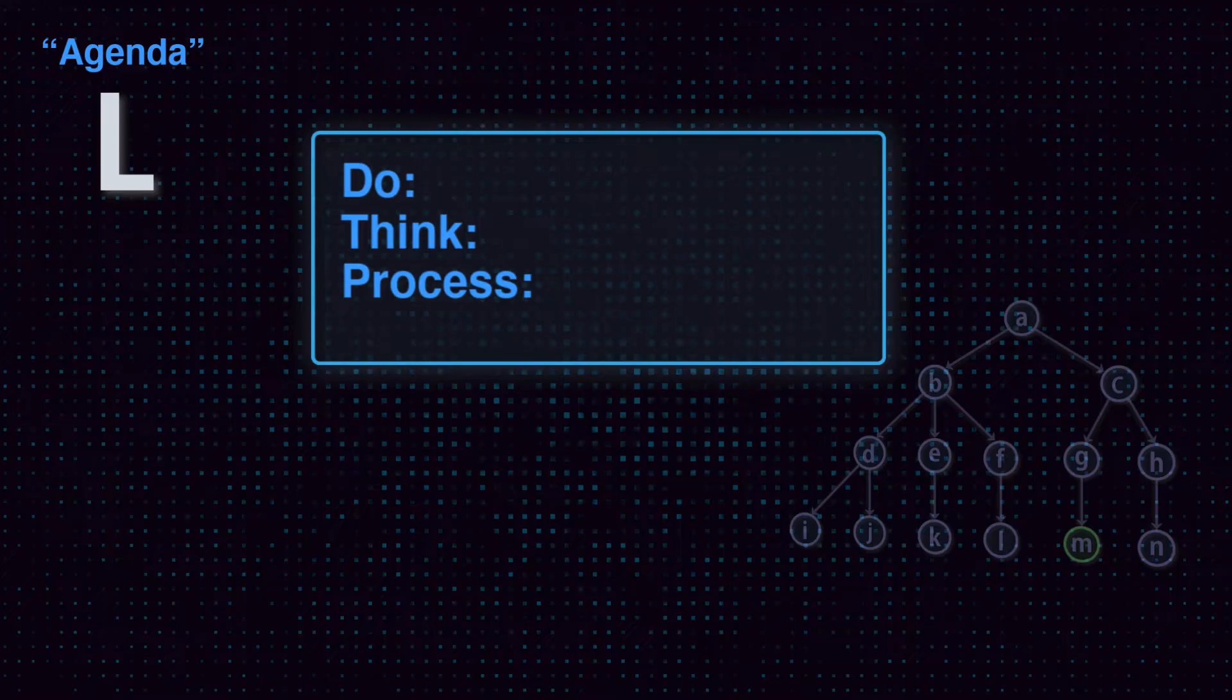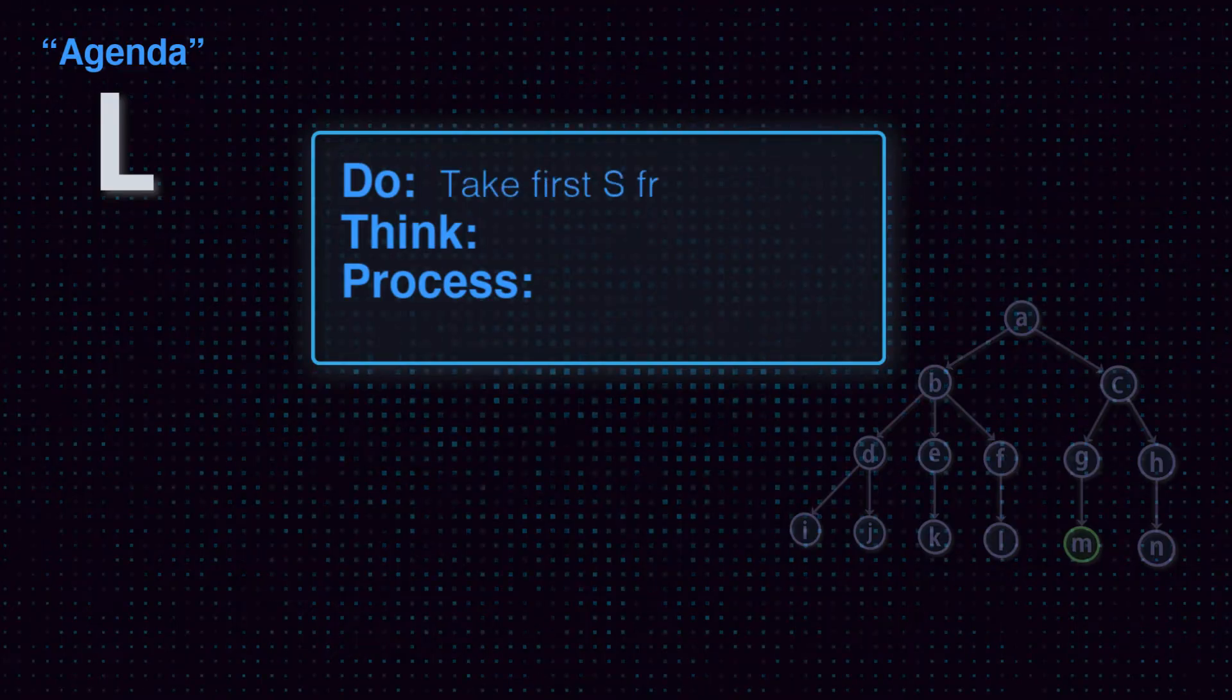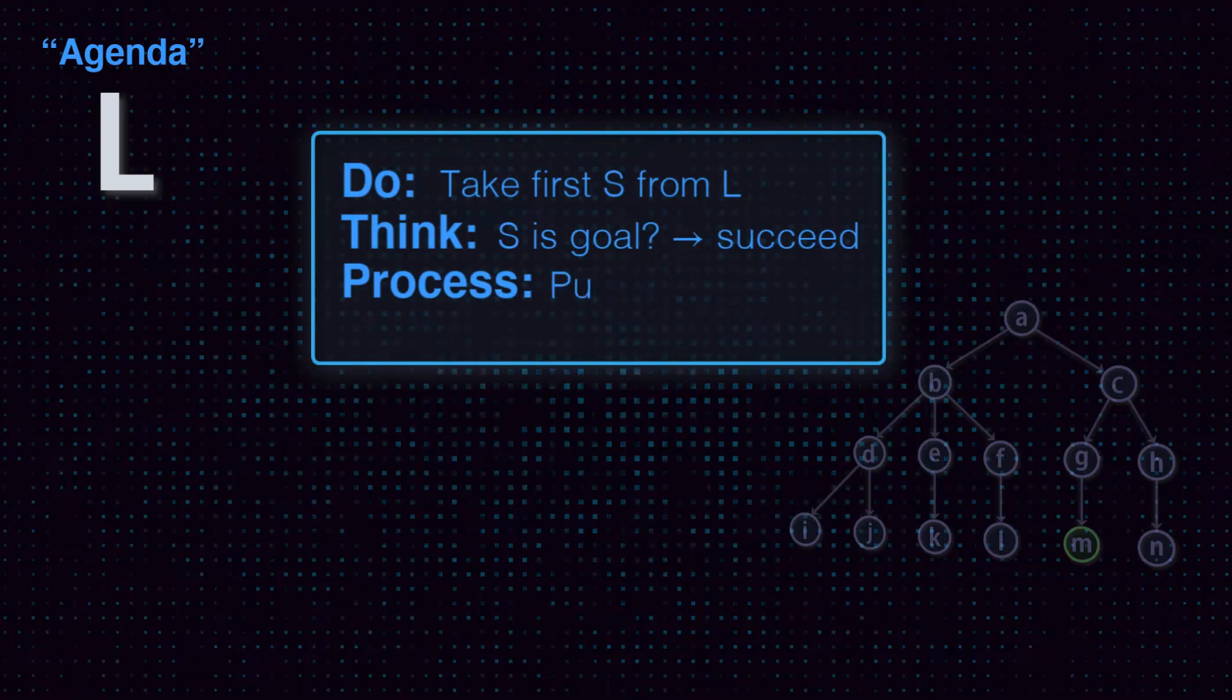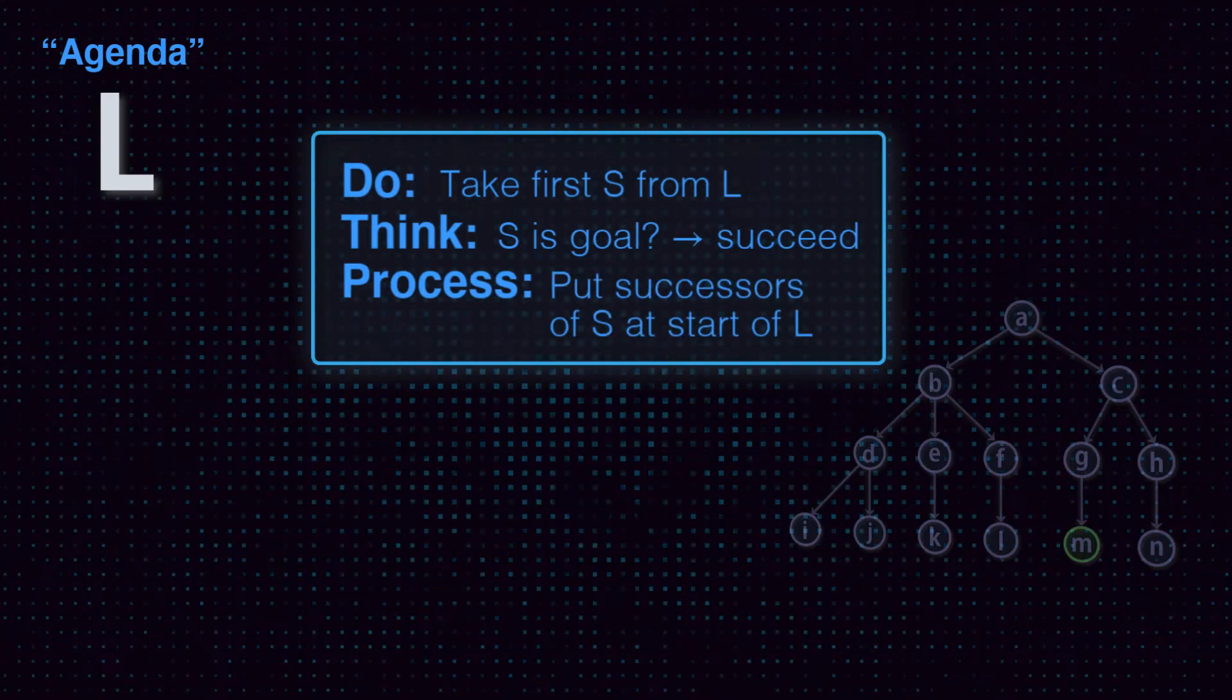We'll use this simple three-step loop. Take a state from the agenda. Check to see if it's the goal. If not, put the successors in the agenda.